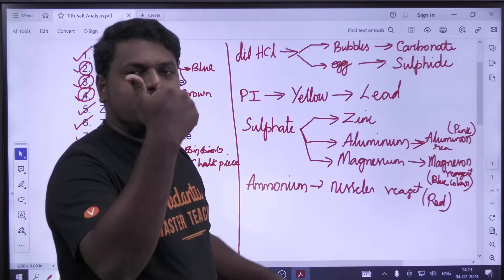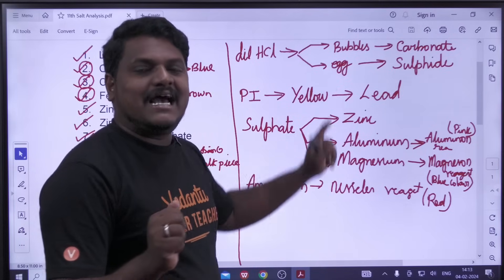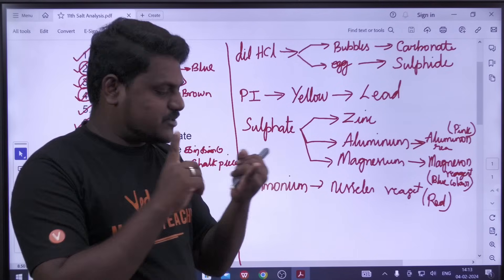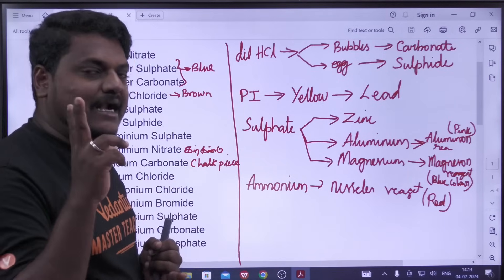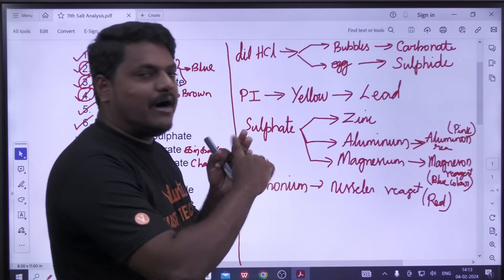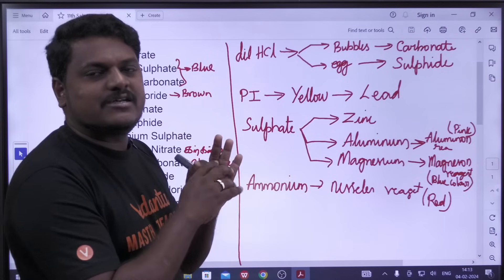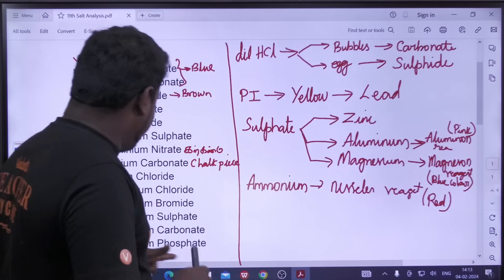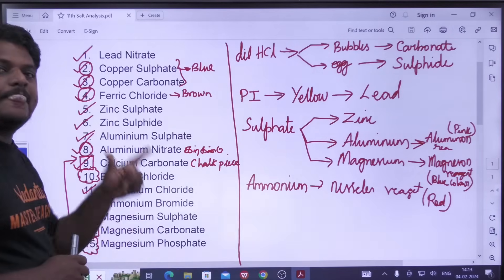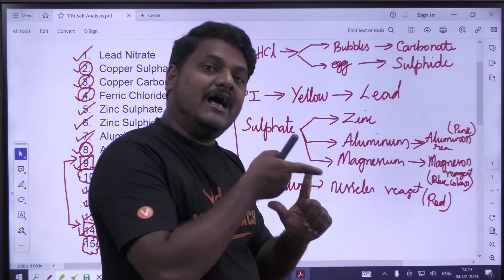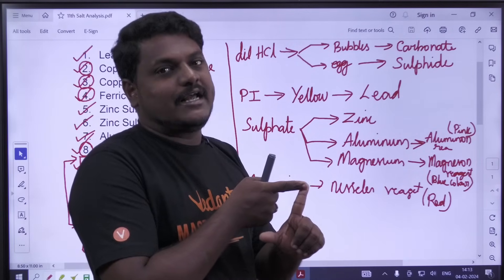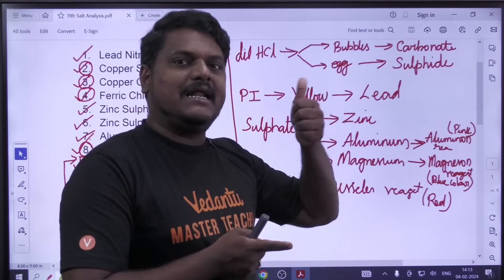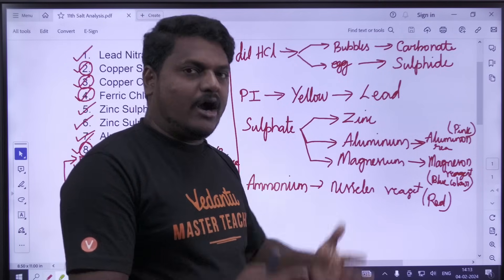Aluminium sulphate, zinc and zinc sulphate, ammonium, ammonium. Barium chloride, magnesium phosphate, magnesium phosphate. Magnusson, magnesium phosphate, barium chloride — in order.